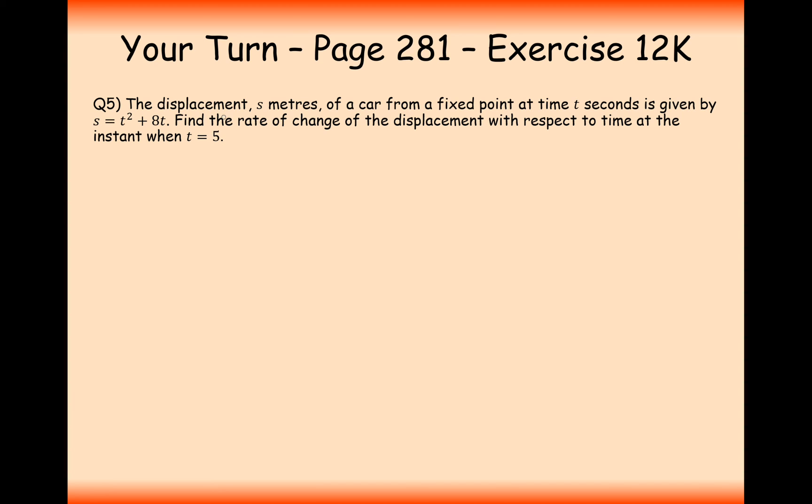Let's have a go at this question then. The displacement s of a car from a fixed point at time t seconds is given by the formula s equals t squared plus 8t. Find the rate of change of the displacement with respect to time at the point when t equals 5. Now, what we need to do here is differentiate with respect to time.